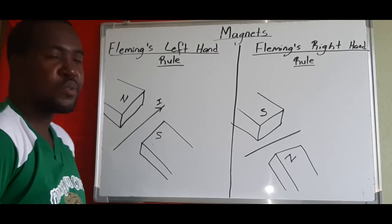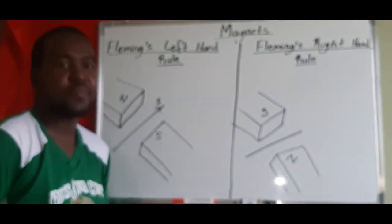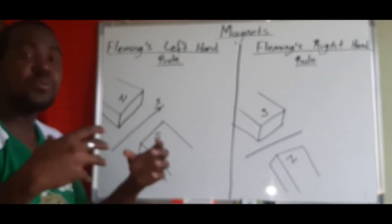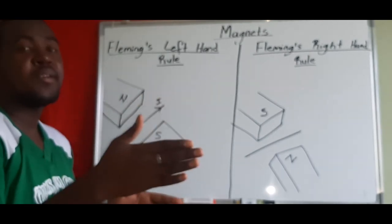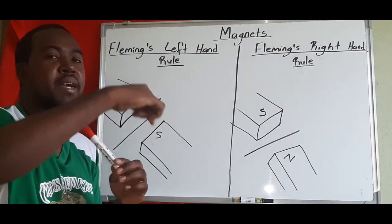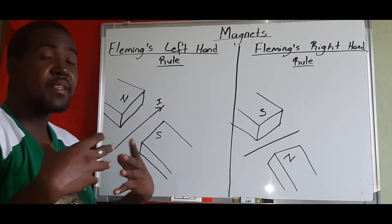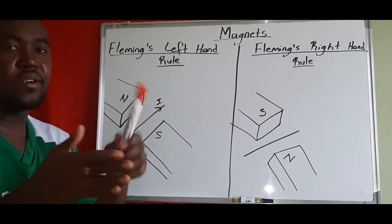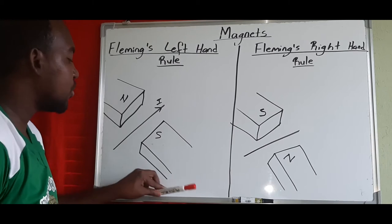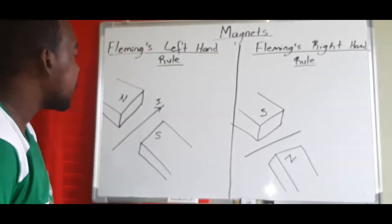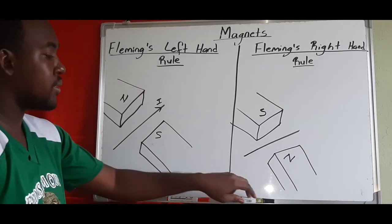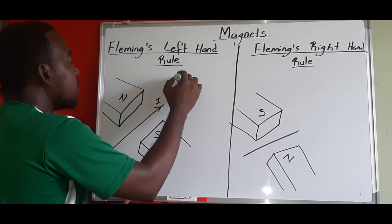Now let's look at the induction of current by magnets, and two rules: Fleming's left-hand rule and Fleming's right-hand rule. Fleming's left-hand rule tells us that between two magnets we have a magnetic field, and if we have a current-carrying wire, we also have a magnetic field. When those two magnetic fields come into contact with each other, they interfere and create a force on the wire carrying the current.